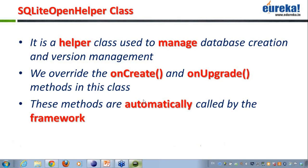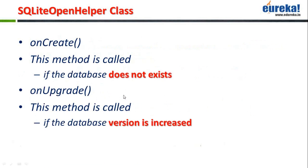These methods are automatically called by the framework. For example, the onCreate method will be called the very first time I'm creating my database. If my database is not present in my application, this method will get called.